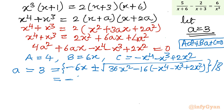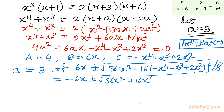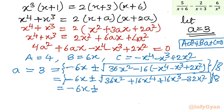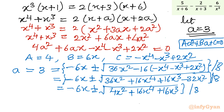Now let us simplify. We have minus 6x plus or minus square root of (36x² + 16x⁴ + 16x³ minus 32x²), divided by 8. Combining like terms under the root: 36x² minus 32x² gives 4x², so we have square root of (4x² + 16x⁴ + 16x³). The denominator is unchanged at 8.